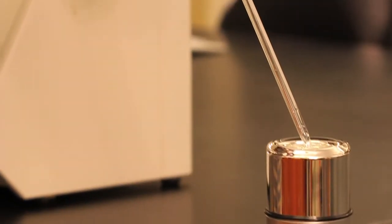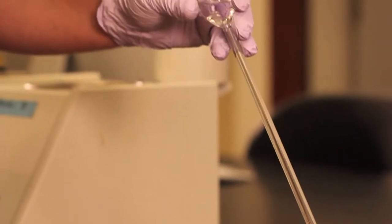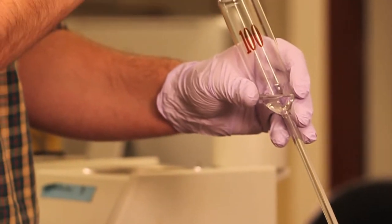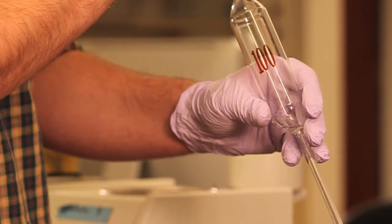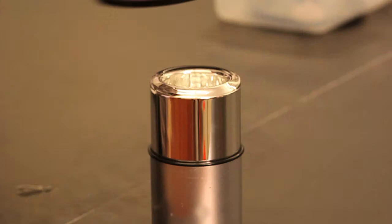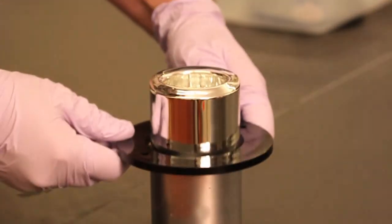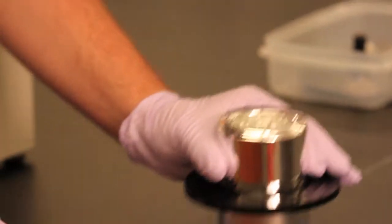First, record the mass of an empty Dewar flask. Dispense a measured amount of your solution of interest into the Dewar and re-weigh. Place the black retaining ring around the Dewar and place the Dewar and ring into the calorimeter housing.